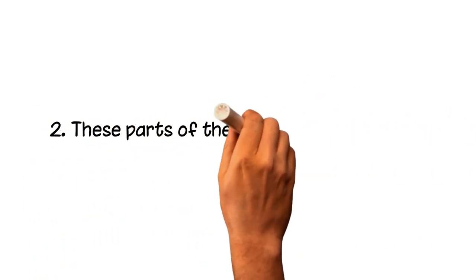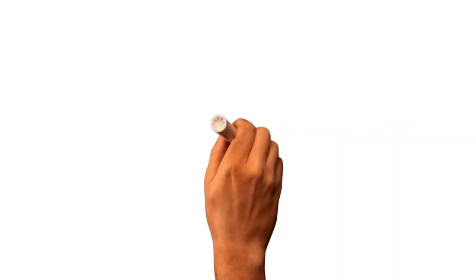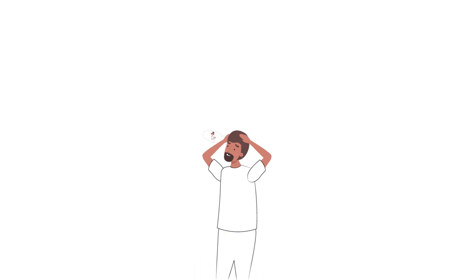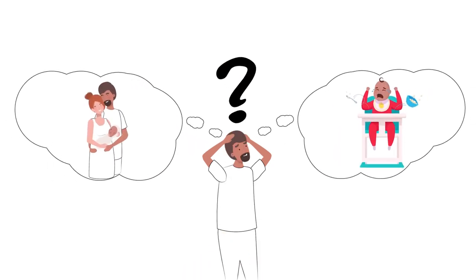Number two, these parts of the self share information and relate to one another. The two sides of Ken are in conflict. One part wants to be a father and another does not, and this is making it hard for him to reach a decision.